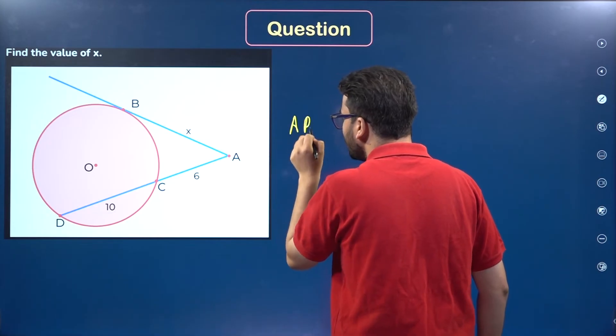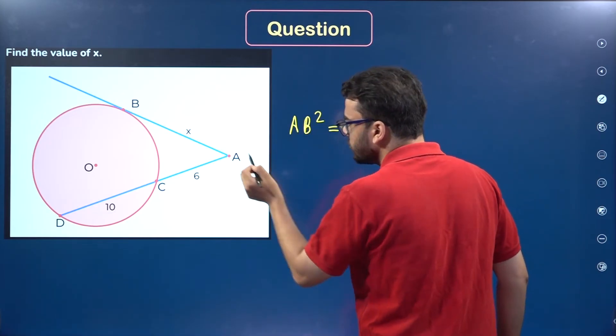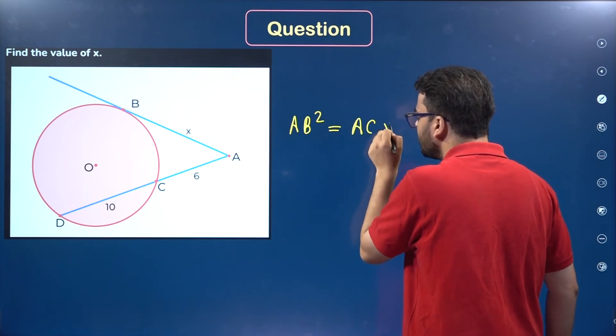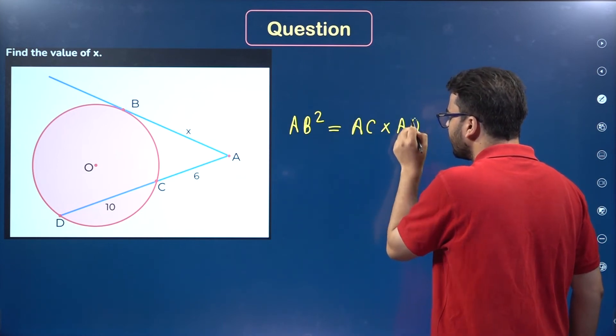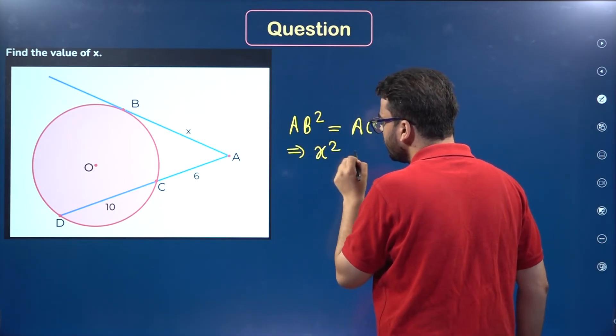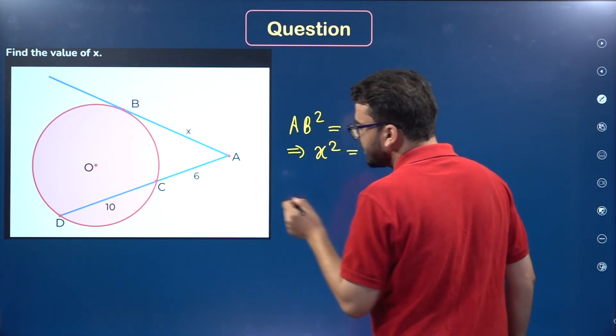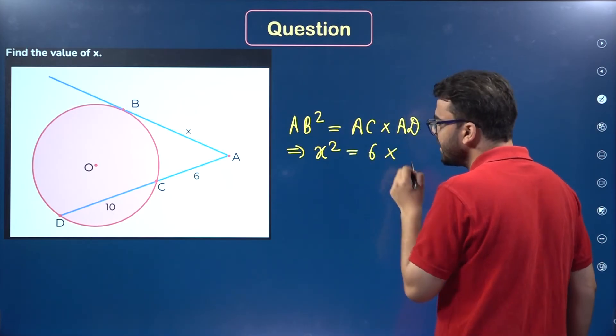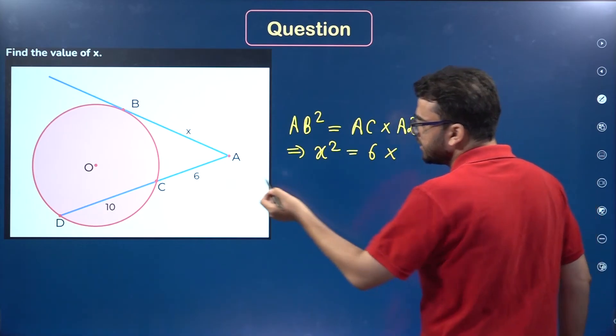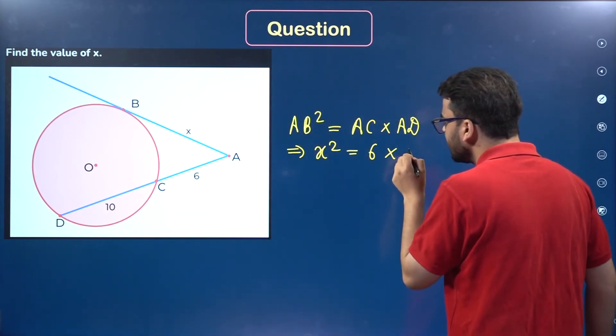We can say AB² = AC × AD. AB is X, AC is 6, and AD is 16, which is 6 plus 10. So X² = 6 × 16.